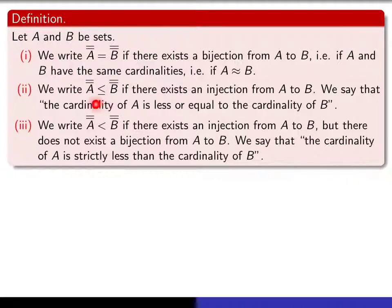And we're going to use this notation if the cardinality of A is less or equal to the cardinality of B, but it's impossible to find a bijection from A to B. And in this case, we're going to say the cardinality of A is strictly less than the cardinality of B.